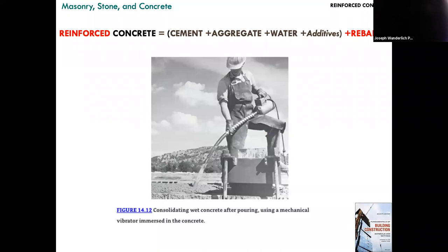After the concrete pour, you want to get the large air bubbles out — this is different from air entrainment, which intentionally injects tiny bubbles for freeze-thaw resistance. During a large pour, air bubbles and aggregate pockets can form. On personal projects you can tamp them out with certain tools, but on large projects, professional contractors use equipment to vibrate the concrete and remove these voids.